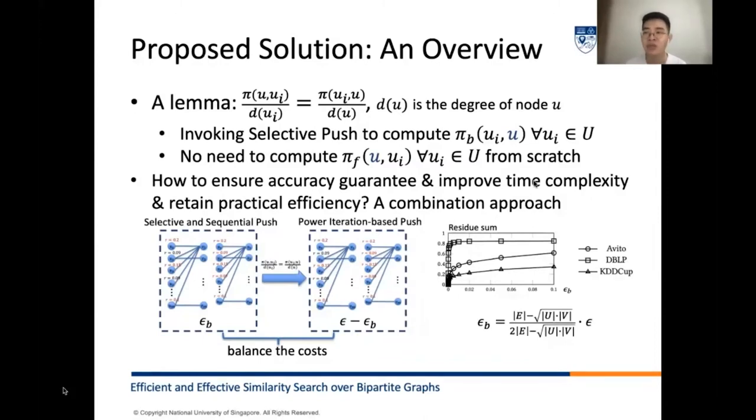To ensure the accuracy guarantees for the final BHPP values and improve practical efficiency as well as the time complexity, we proposed an improved selective push called selective and sequential push, and also introduced the power iteration based push. Given an error threshold epsilon_b as input to the selective and sequential push, we obtain the approximate HPP values and then transfer them accordingly before refining them in the power iteration push with the error threshold epsilon minus epsilon_b. ApproxBHPP is to achieve a balanced trade-off between these two phases.